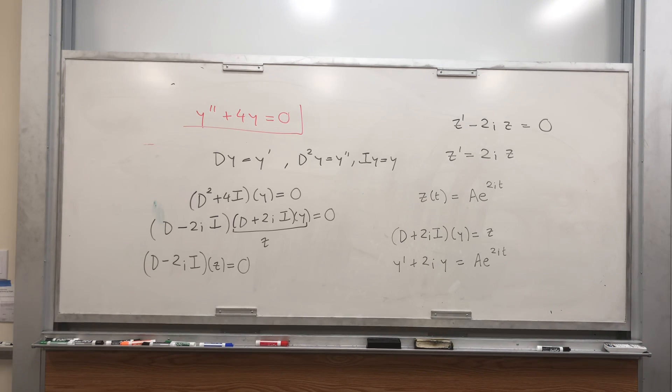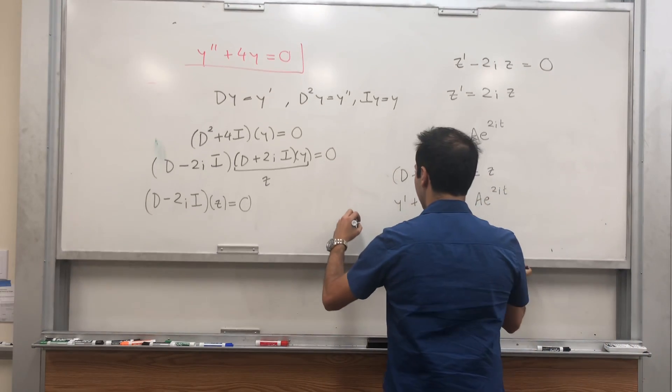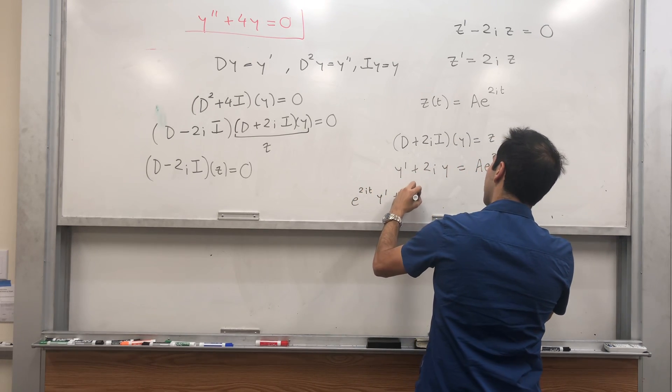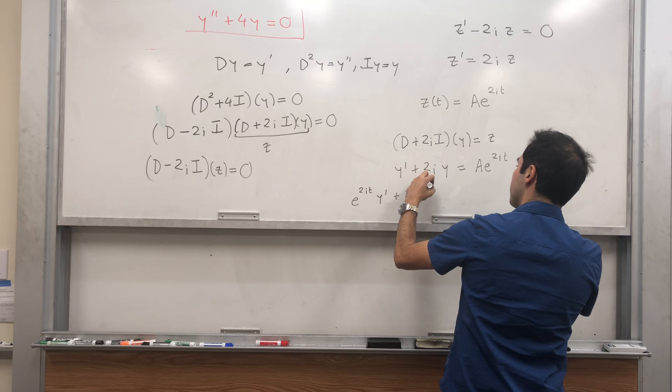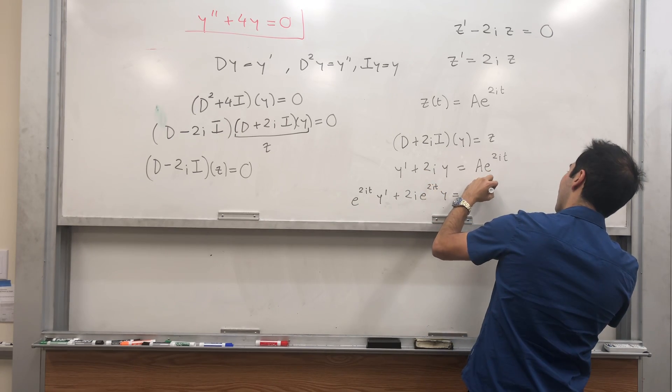And then, all you do is multiply by your integrating factor. So you multiply by e to the 2it. So e to the 2it y prime plus 2i e to the 2it y equals Ae to the 4it.